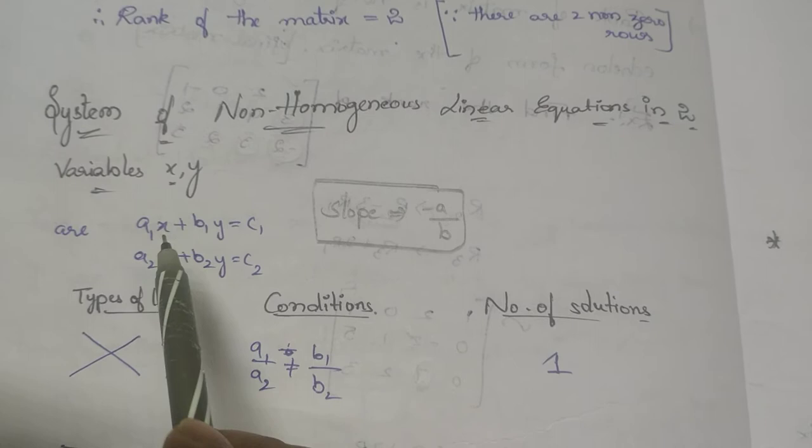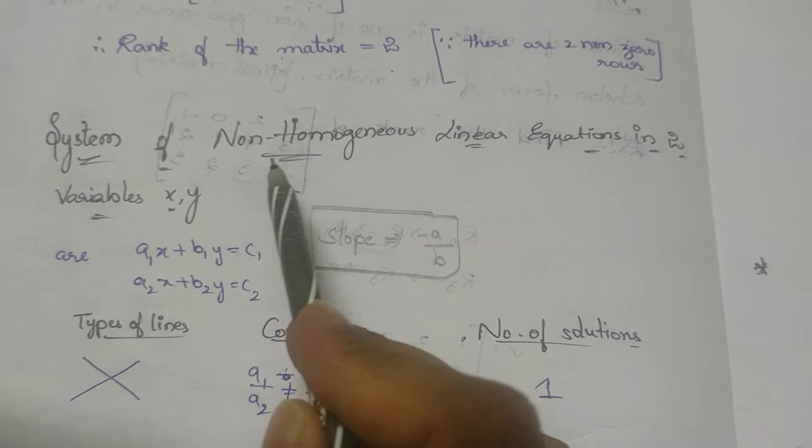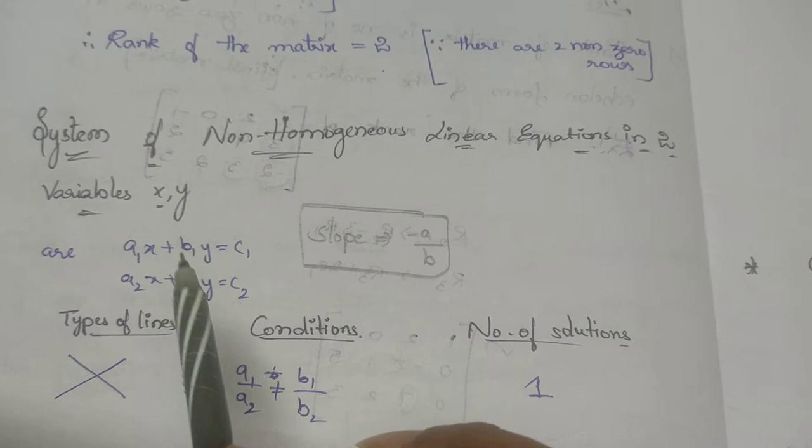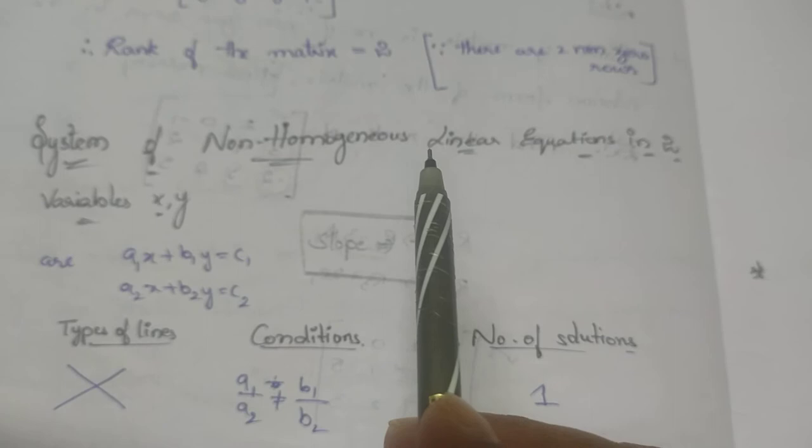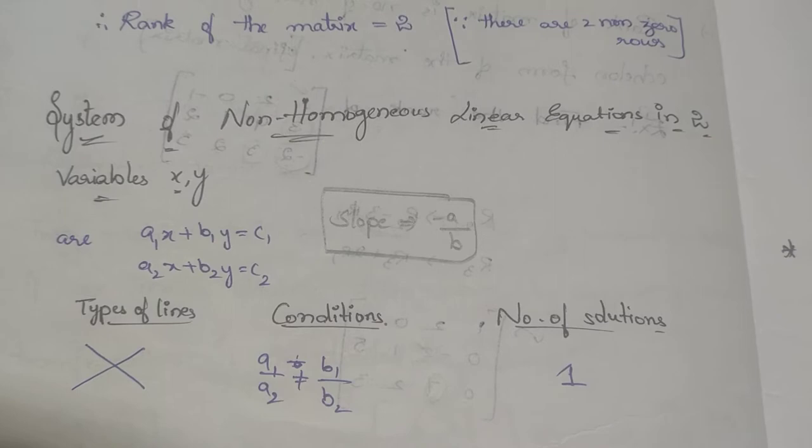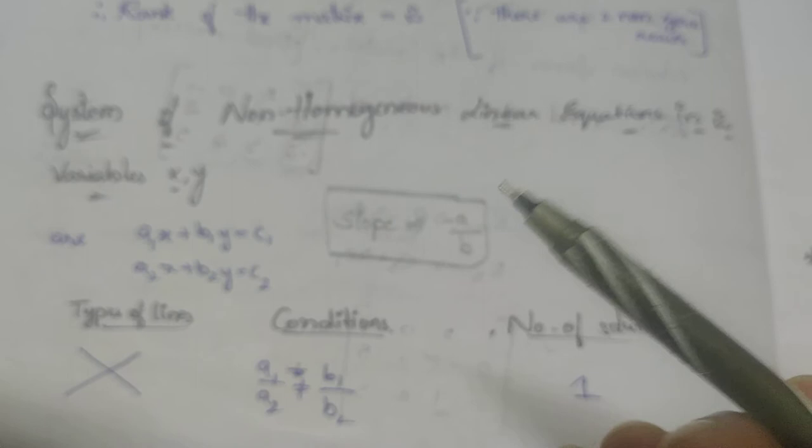Let the equations be a1x + b1y = c1 and a2x + b2y = c2. The meaning of non-homogeneous: if every term has the same degree, those are called homogeneous equations. If the terms have different degrees, those are called non-homogeneous equations. For example, degree one, degree one, and constant degree zero — so it is non-homogeneous.